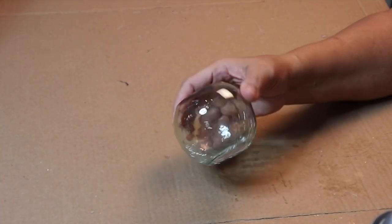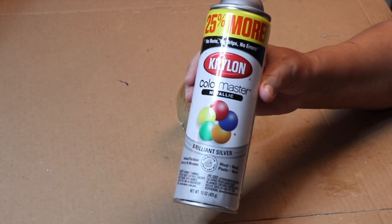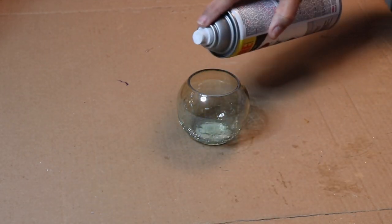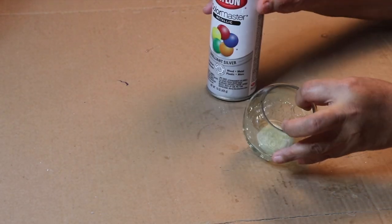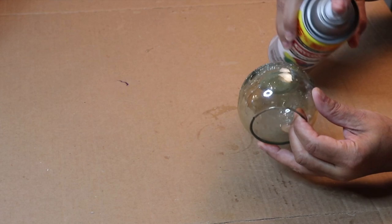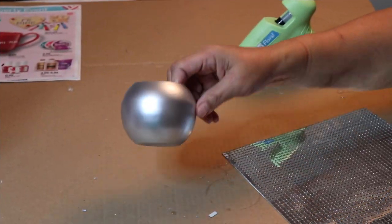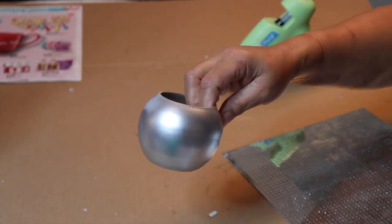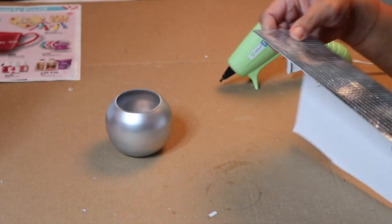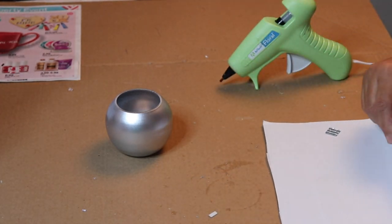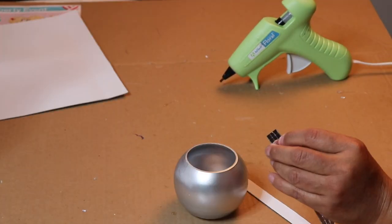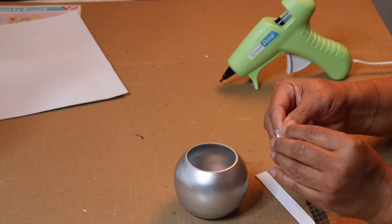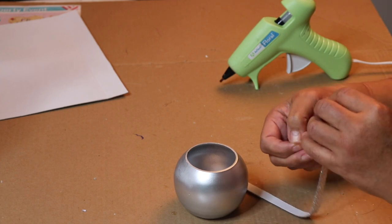Now on to our smaller bowl. I'm going to start out by spray painting the inside and the outside with this silver spray paint. We're going to decorate this bowl pretty much the same way we did the first one, minus the flowers. This time I'm going to wrap three rows of the mirror tile around the center of the bowl.